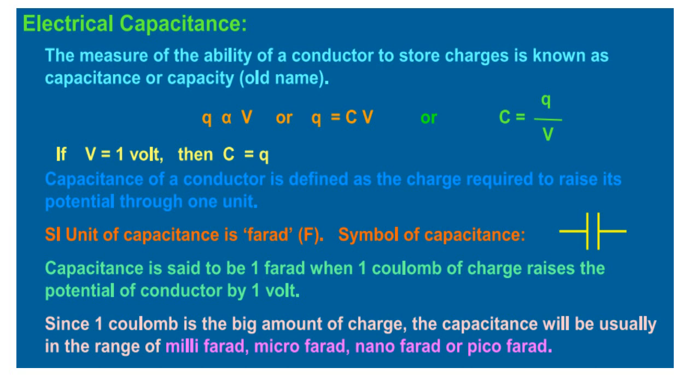Hence, the capacitance of a conductor may be defined as the charge required to increase the potential of the conductor by unit amount. The capacitance of a conductor is the charge required to increase the potential of the conductor by unit amount.